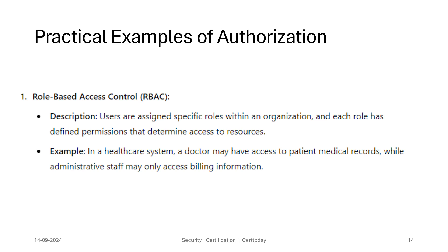Some examples of authorization: the first is role-based access control, or RBAC. Here, users are assigned specific roles within an organization, and each role has defined permissions that determine access to resources. An example would be in a healthcare system — a doctor may have access to patient medical records while administrative staff may only access billing information. You don't want the admin at a hospital to have access to all your medical conditions.